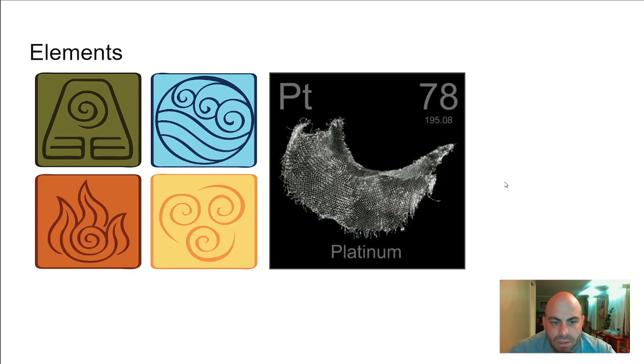An element is a substance made up of one type of atom. It is not earth, wind, fire, and air, or anything like that. It is a substance made up of one type of atom. So there on the right, you see platinum. That piece of platinum is made up of only platinum. Platinum is an element.